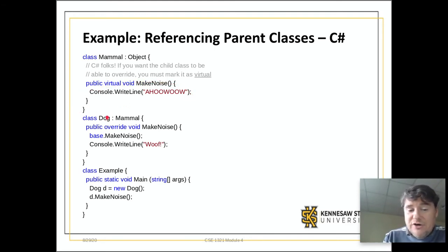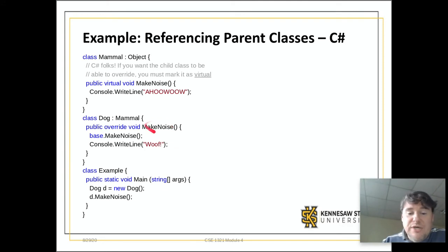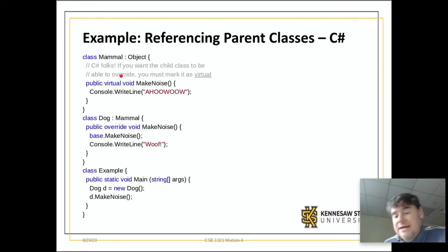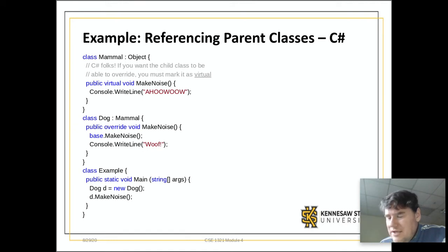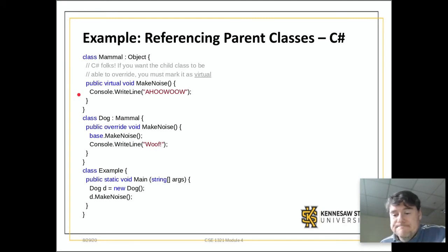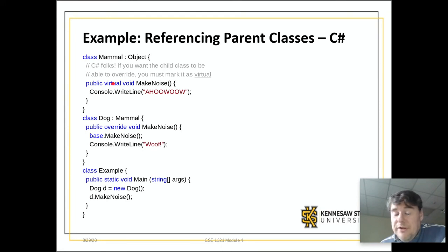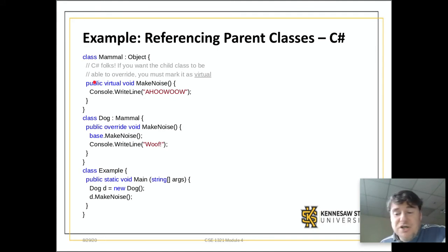If I say public void makeNoise in mammal and then make dog that inherits from mammal and try to say public override void makeNoise, I'm going to get a compile error saying you cannot override makeNoise because it was not declared virtual. C# has the ability to prevent children from overriding methods. Java does not have this requirement—in Java you can override any method by default; there is no equivalent virtual keyword. This is a C# only thing.